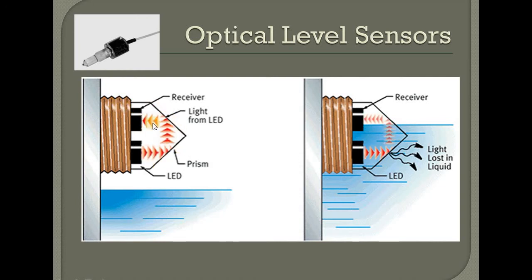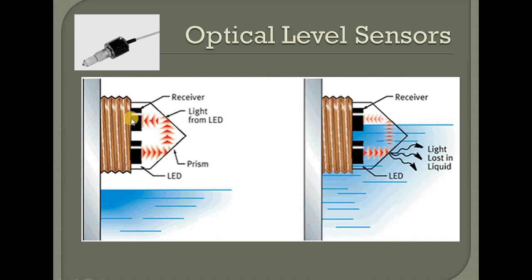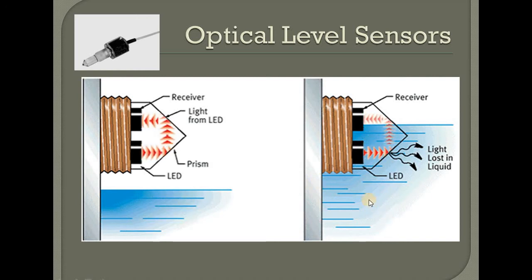The device has one transmitter and one receiver. After the transmitter sends a signal to the receiver — when there is no content, it is not liquid, the answer is correct and the receiver receives the signal correctly. The answer is: no liquid. The liquid level is low.